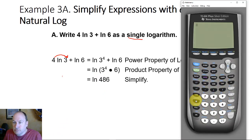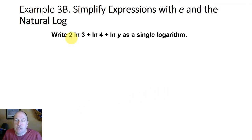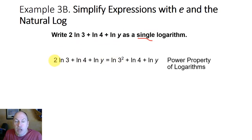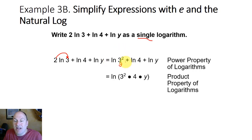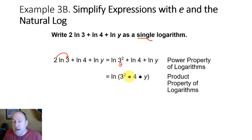The natural log of 486 is approximately 6.186. Let's look at another example: rewriting 2 times ln(3) + ln(4) + ln(y) as a single logarithm. Using the power property, 2 times ln(3) becomes ln(3^2), or ln(9). Since they are all added — and if they were subtracted, that would be the quotient rule — we use the product property: ln(9) + ln(4) + ln(y) = ln(9 × 4 × y) = ln(36y).